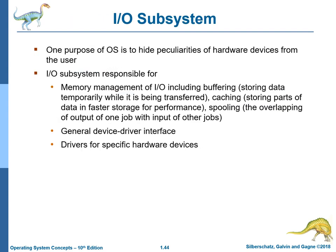I/O subsystem: one purpose of the operating system is to hide the peculiarities of hardware devices from the user. The I/O subsystem is responsible for memory management of I/O, including buffering — storing data temporarily while it is being transferred — and caching, storing parts of data in faster storage for performance. Spooling is the overlapping of output of one job with input of other jobs. There is a general device driver interface and drivers for specific hardware devices.